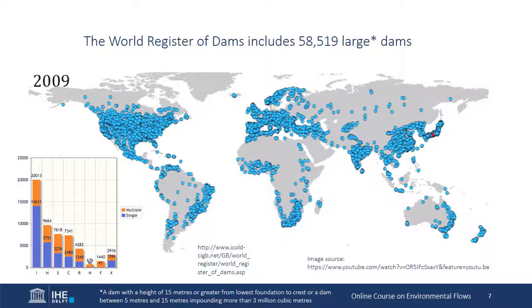Dam operations are a major target for e-flows assessment and implementation, and there are many dams to be addressed. The World Register of Dams contains nearly 60,000 large dams, and there are millions of smaller dams worldwide. Of the referenced single-purpose dams in the register, about half are for irrigation and about 20% for hydropower; others focus on water supply, flood protection, and other purposes. 17% of reference dams are used for multiple purposes. The largest numbers of large dams are in China, followed by the USA, India, Japan, Brazil, and Canada. Other areas with numerous large dams include Eastern and Western Europe, Southern and Western Africa, and Australia. There is great diversity in the approaches countries take to cope with impacts of these dams, but no region or country has gotten this right so far.